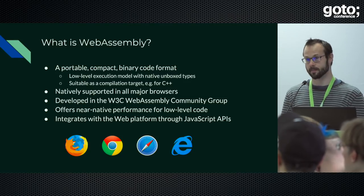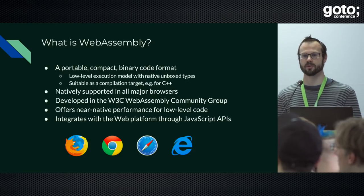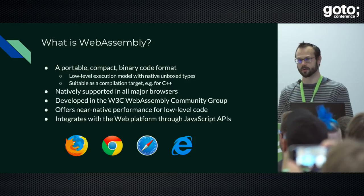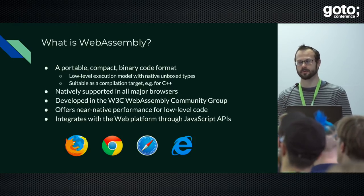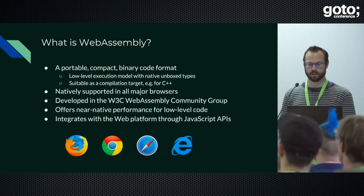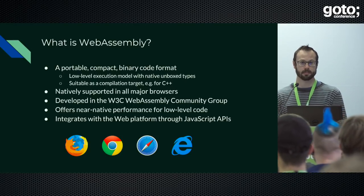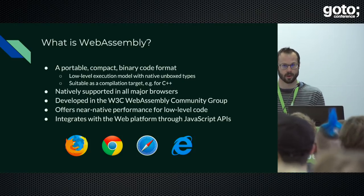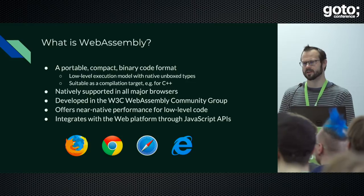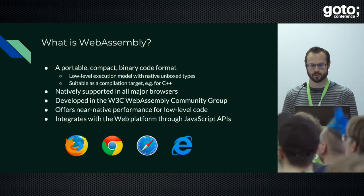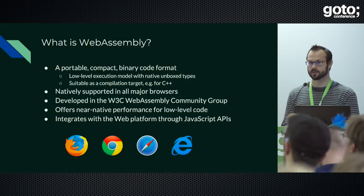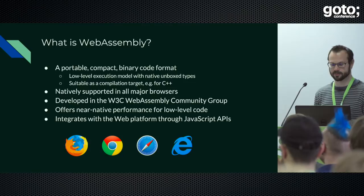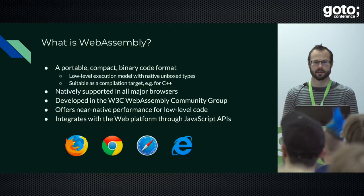It's designed to be compact, and to be compact it's a binary format, so you don't see text unless you disassemble a binary. In order to be universal it has a low-level execution model. We wanted to support languages like C++ because many people had C++ applications such as games and were already compiling them to the web and running them in JavaScript. Nowadays it's natively supported in all major browsers — Chrome, Firefox, Safari, and Edge.